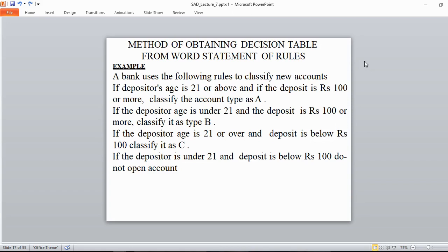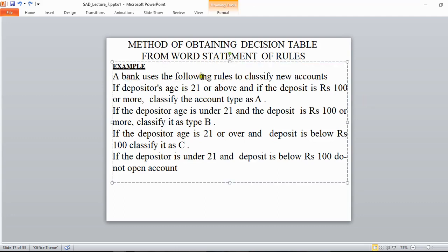There are conditions and actions. The condition determines the action. So this is how we identify condition and action - the condition leads to the action. Let's look at the example: a bank uses the following rules to classify new accounts.